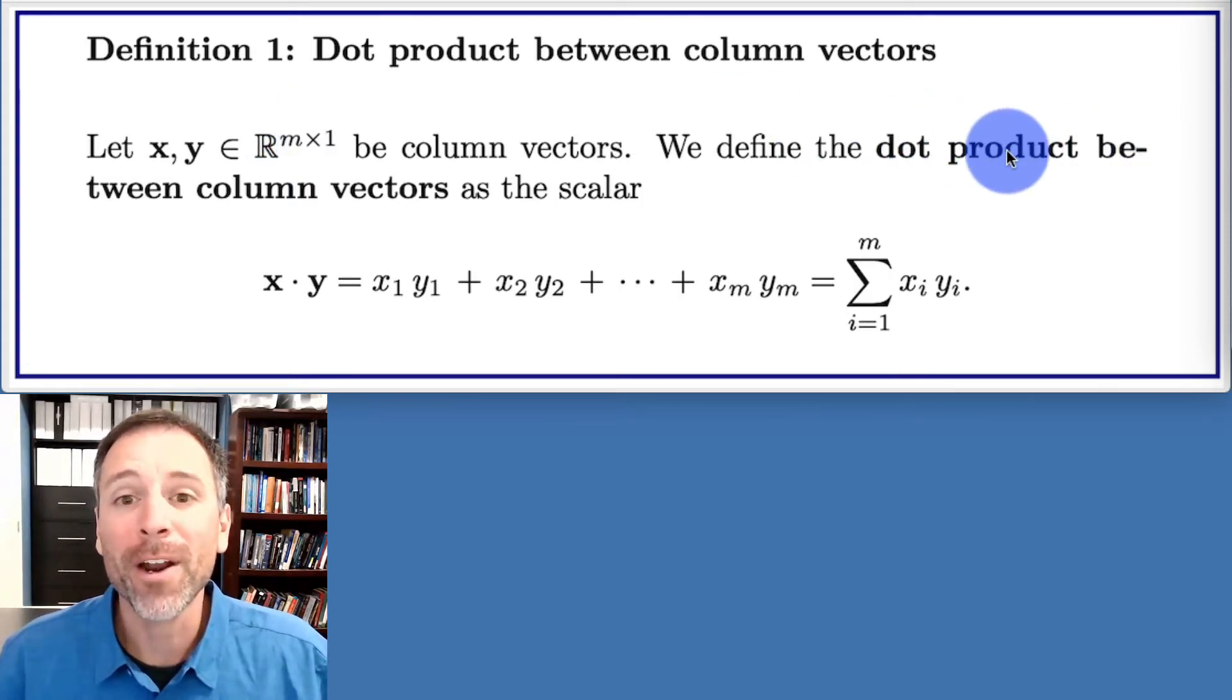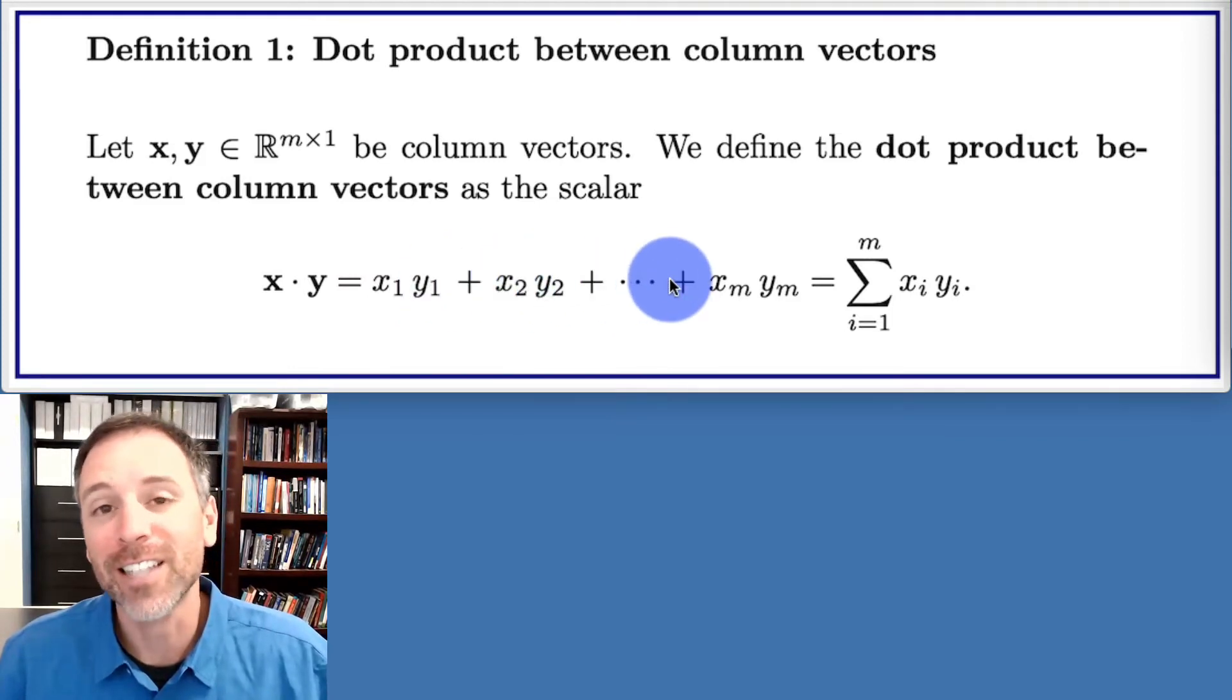Then we define the dot product operation between these column vectors to be the scalar valued output x dot y, which is equal to x1 times y1 plus x2 times y2 plus all the way to the end xm times ym.